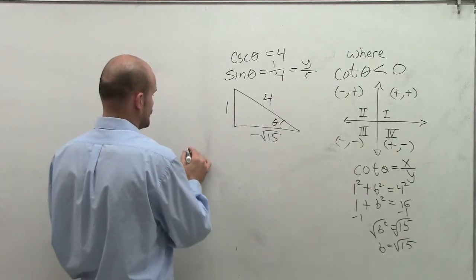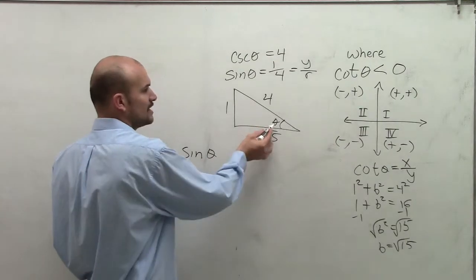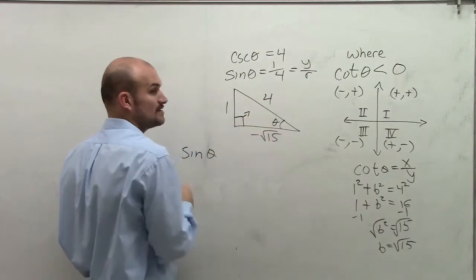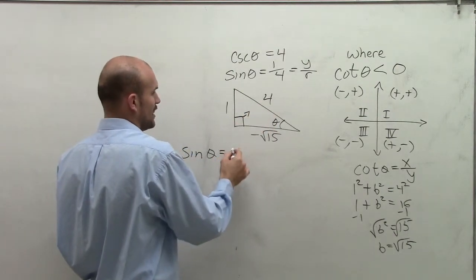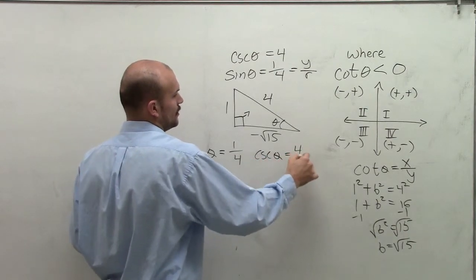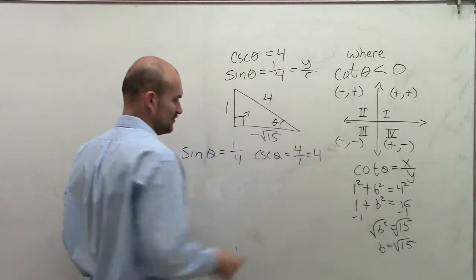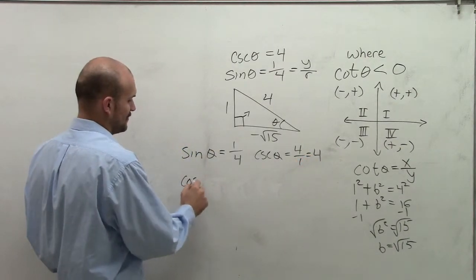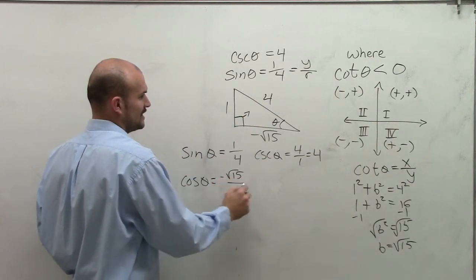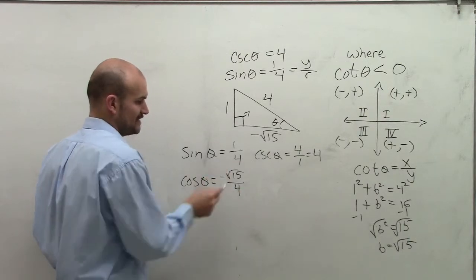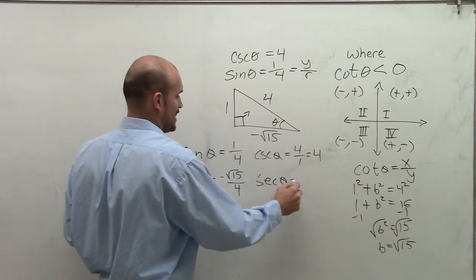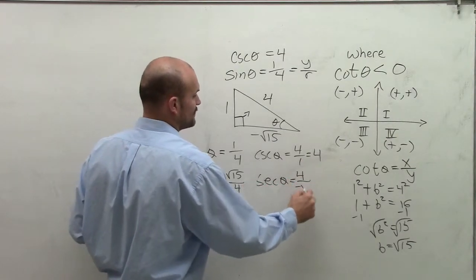Now let's evaluate all six trigonometric functions. Sine of theta is opposite over hypotenuse, which is 1 over 4. Cosecant is the reciprocal of that: 4 over 1, which equals 4. Cosine of theta is adjacent over hypotenuse, which is negative square root of 15 over 4. Secant is the reciprocal: 4 over negative square root of 15.